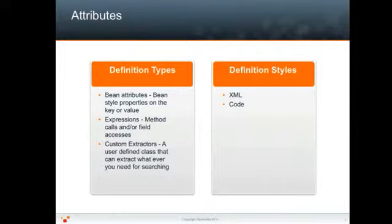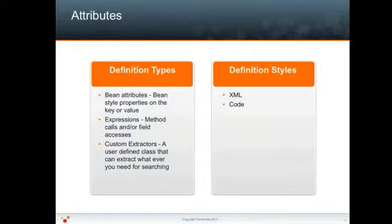There are three kinds of attribute definition types in eHcache search. Bean style, which looks for a Java bean style property on the key or the value. Expression style, which is a string of expressions — combinations of methods and field accesses that return a value. And custom extractor, which is a custom implementation of the extractor interface that returns any value you choose.